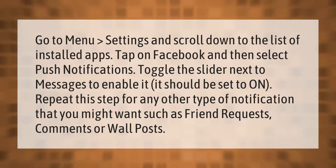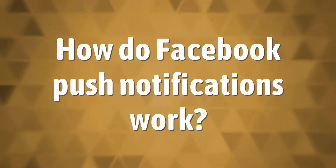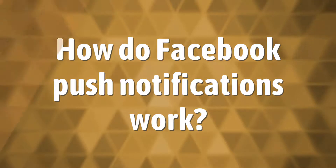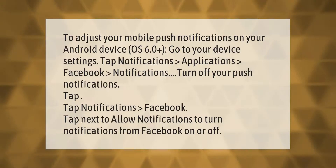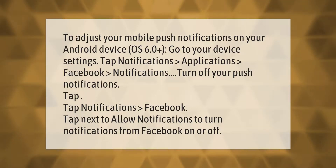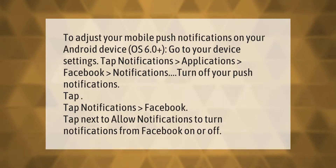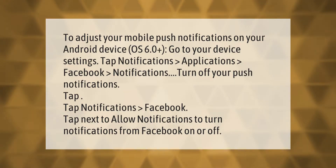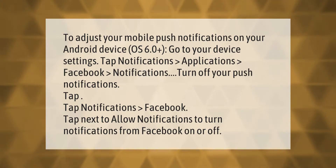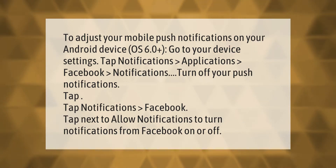To adjust your mobile push notifications on your Android device OS 6.0 or higher, go to your device Settings, tap Notifications, then Applications, then Facebook Notifications. Turn off your push notifications, or tap next to Allow Notifications to toggle Facebook notifications on or off.